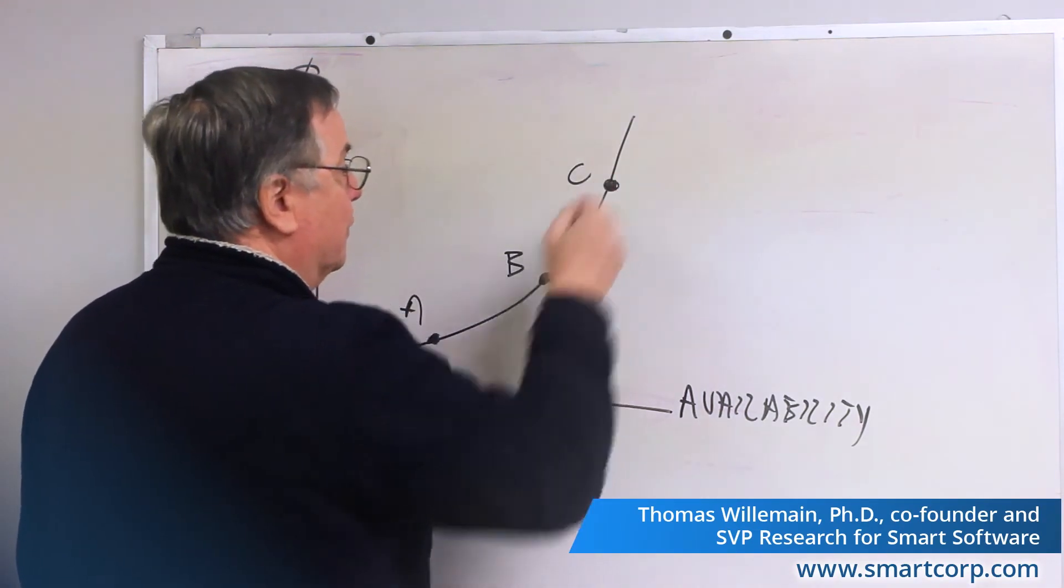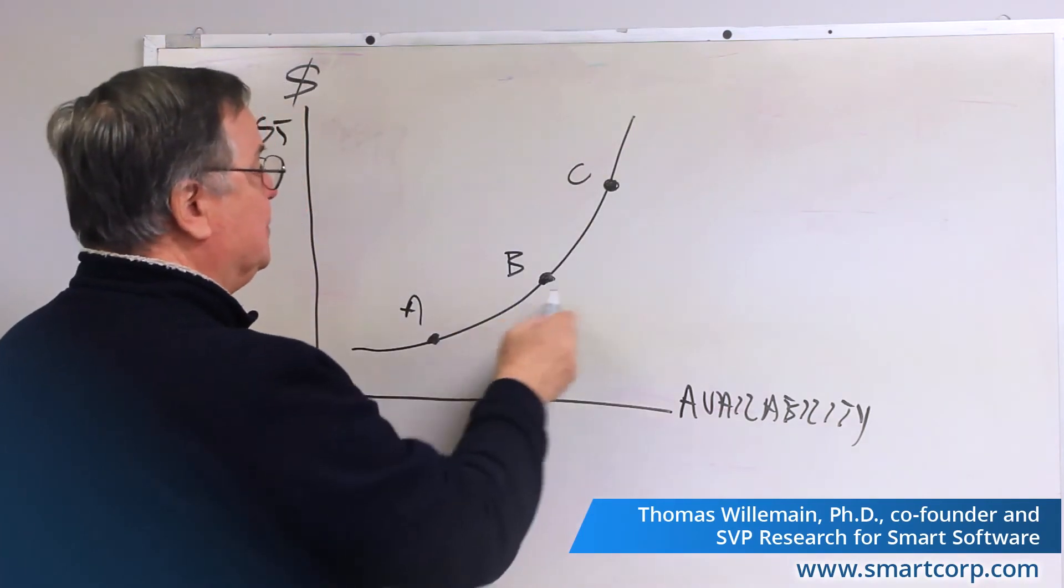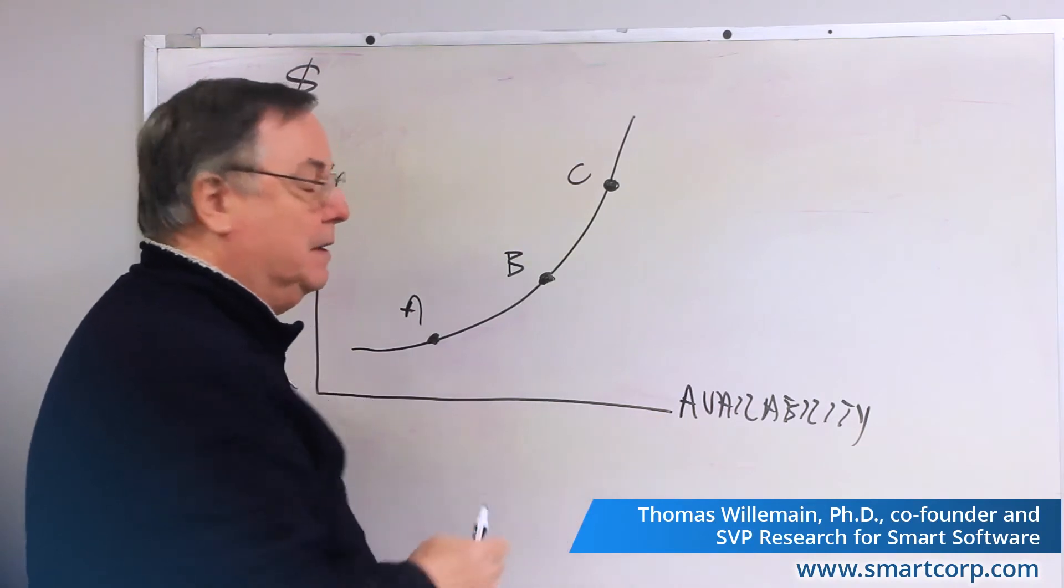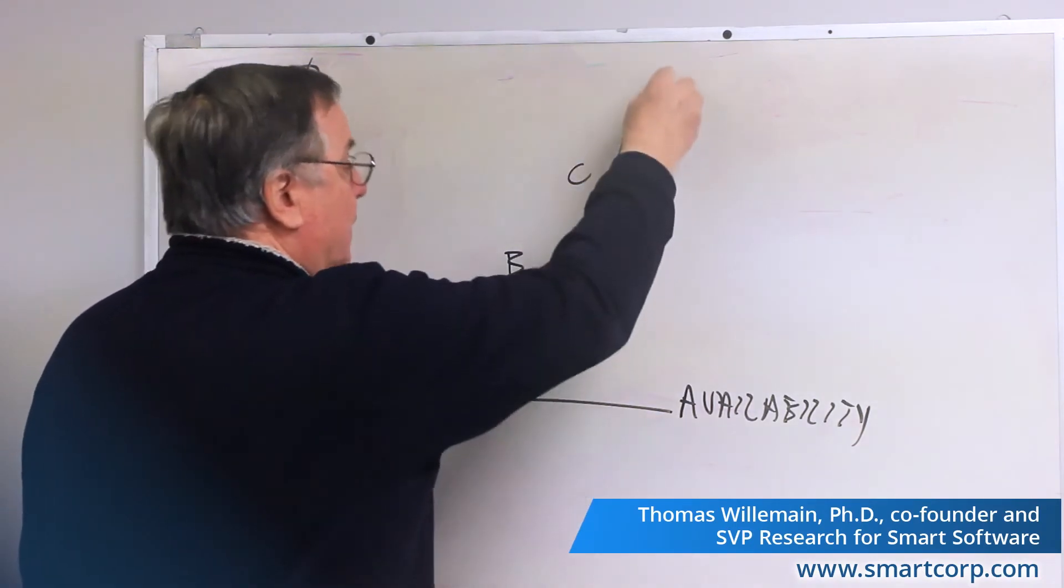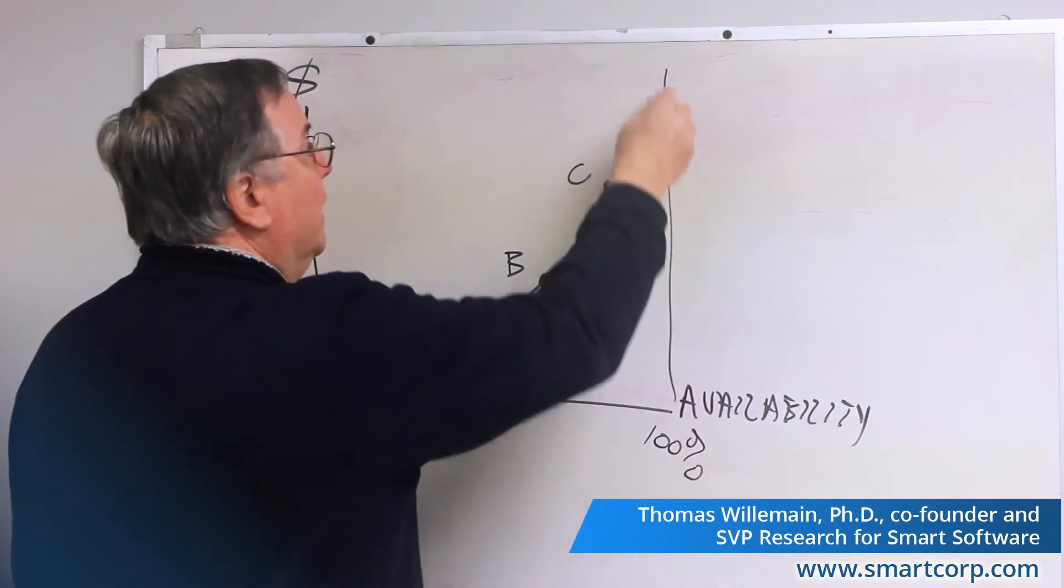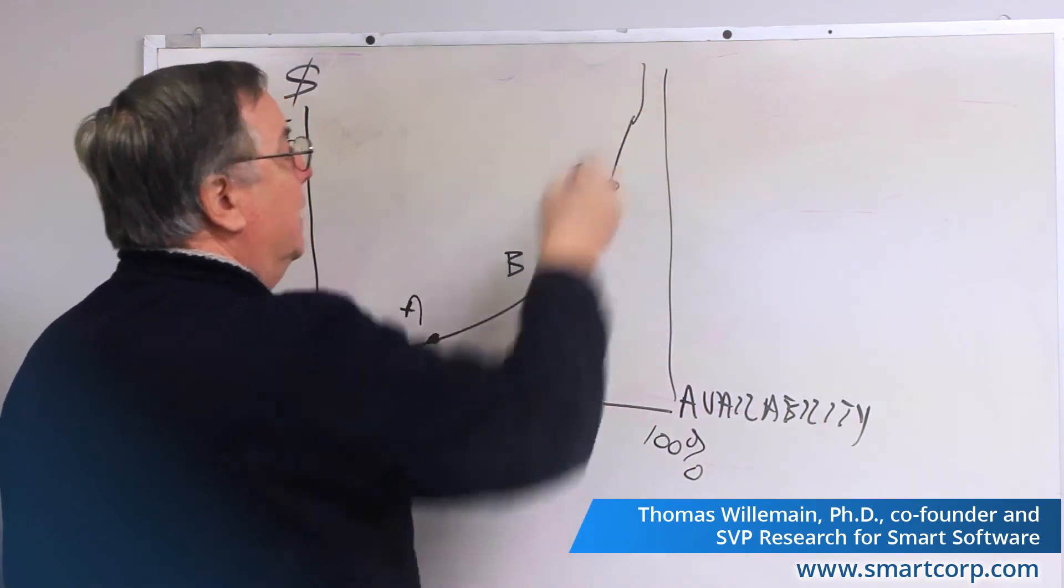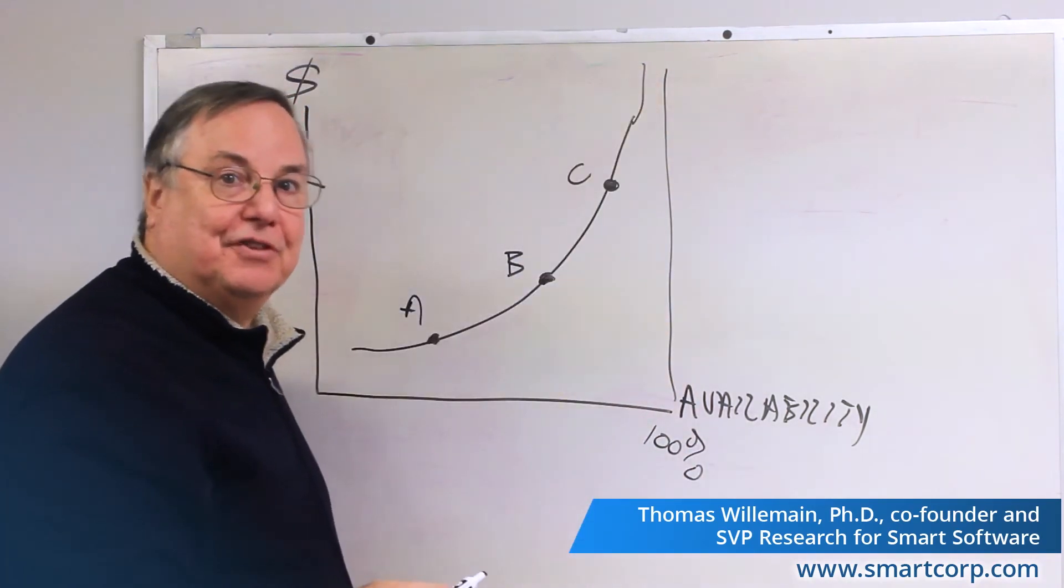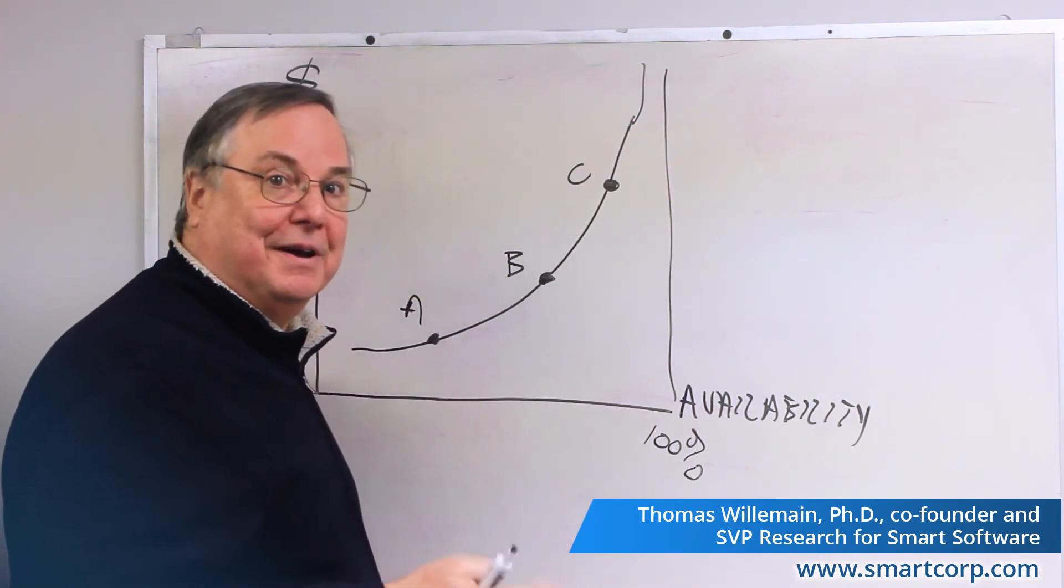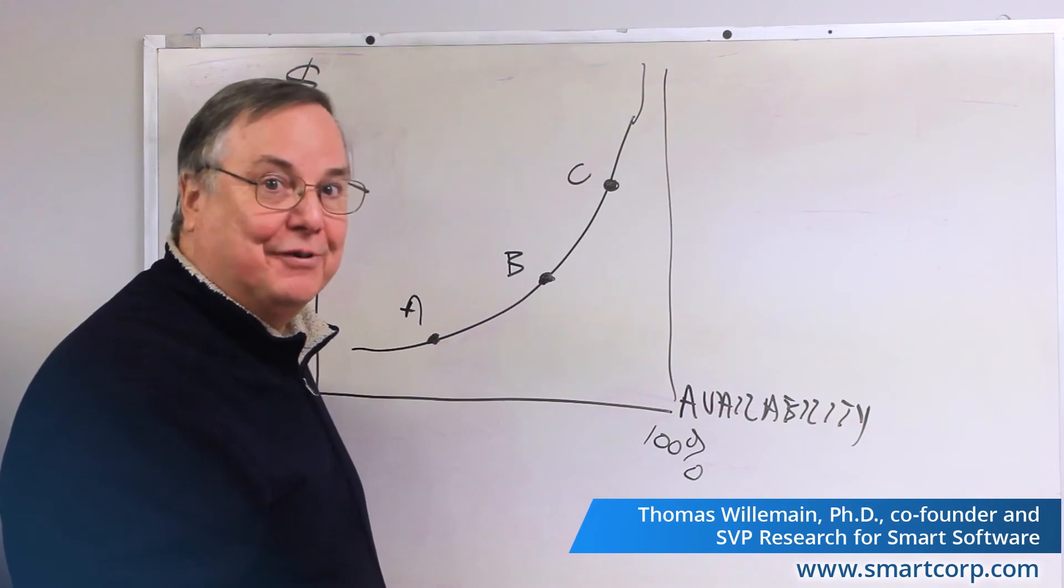And finally, you could go to point C, in which case you're getting increasing costs, but you're also making the items more and more available. And of course, at some point, there's 100% availability. And after a while, it kind of gets ridiculous to keep putting more money in, because 99.999% is probably good enough for everybody.